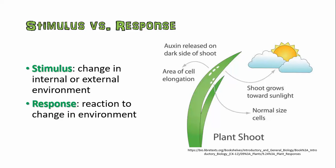First thing we've got to do is establish our terminology. A stimulus is any change in the environment, whether it's internal or external. The response is the reaction that an organism has to that change. So what we see here is a plant that is growing, and it is not growing directly towards the sun originally. It responds to that by changing its direction of growth so that it is now pointing towards the sun, so it can get as much light exposure as possible and perform as much photosynthesis as possible.